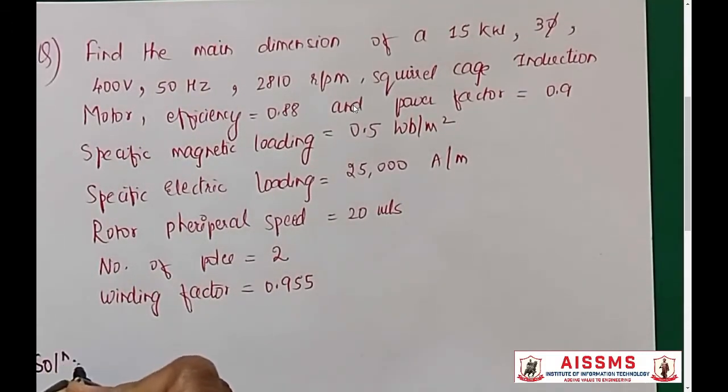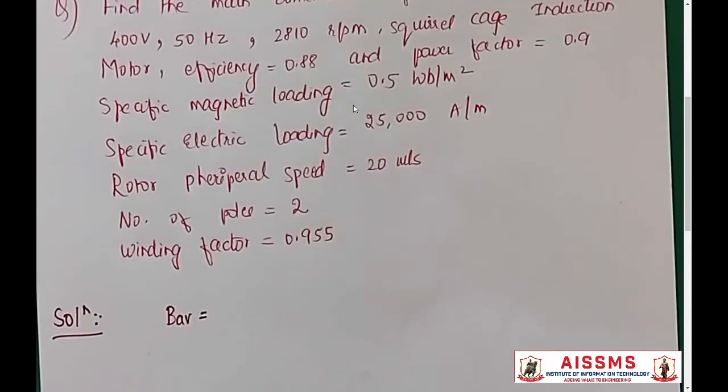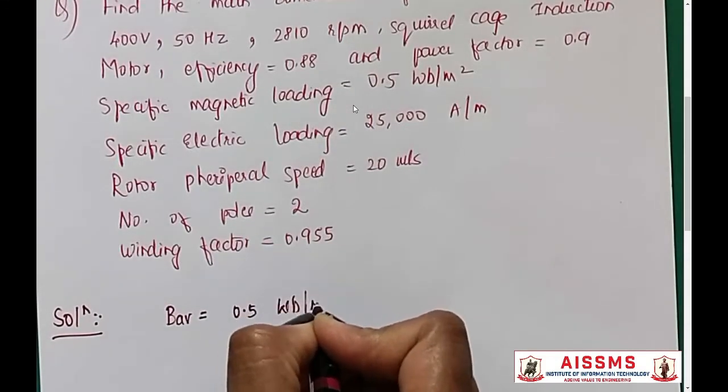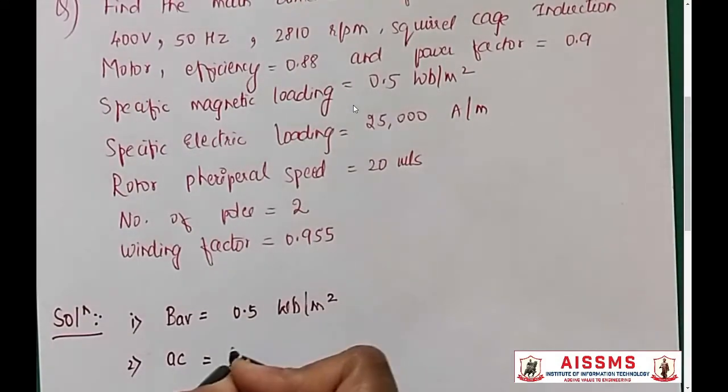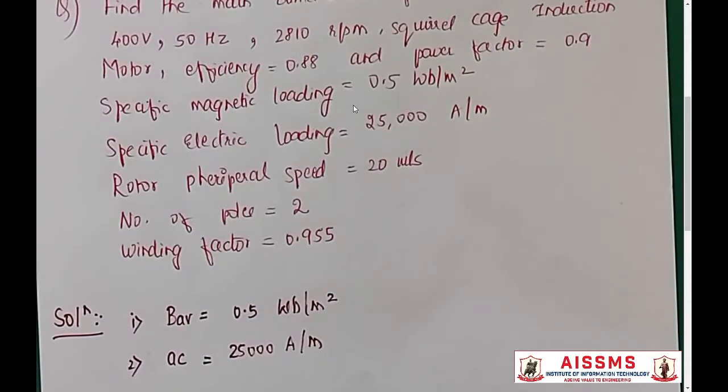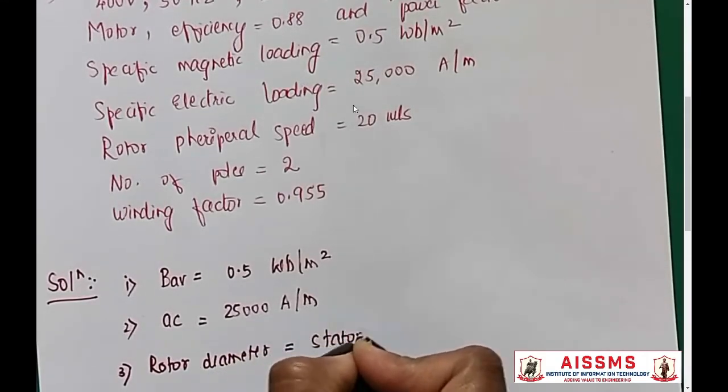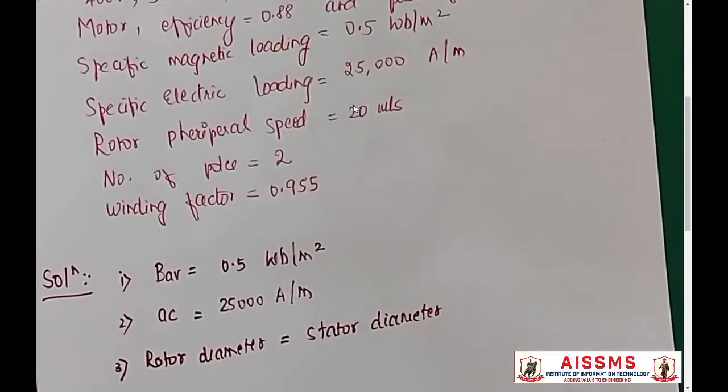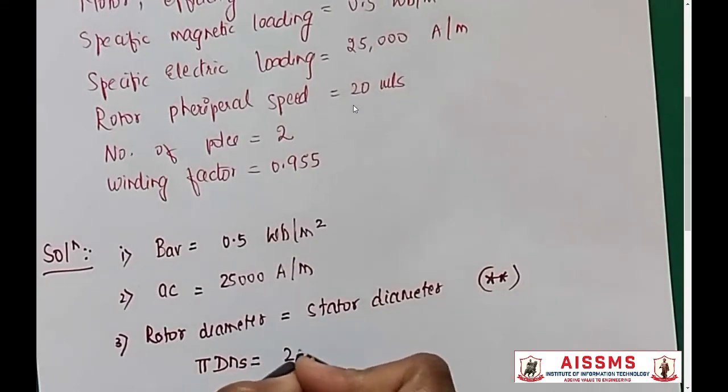The solution begins with specific magnetic loading denoted by BAV, that is BAverage, which is given by 0.5 Weber per meter square. Specific electric loading AC is 25,000 amperes per meter. Rotor peripheral speed is 20 meters per second. With this, we would consider initially that the rotor diameter is same as the stator diameter, neglecting the air gap. This is very important to note. We would be getting a relationship that π D NS equals 20.